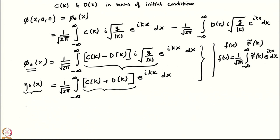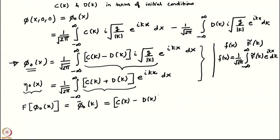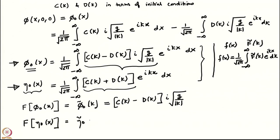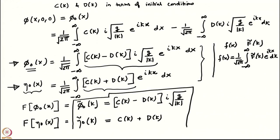We conclude that the Fourier transform of φ₀(x) — which is φ̃₀(k) — is c(k) − d(k) times i√(g/|k|) from the first formula. Similarly, from the second formula, the Fourier transform of η₀(x), which we write as η̃₀(k), equals c(k) + d(k). As expected, these are the equations which connect c(k) and d(k) to the Fourier transforms of the initial conditions. We just have to solve these two simple linear equations in c and d.